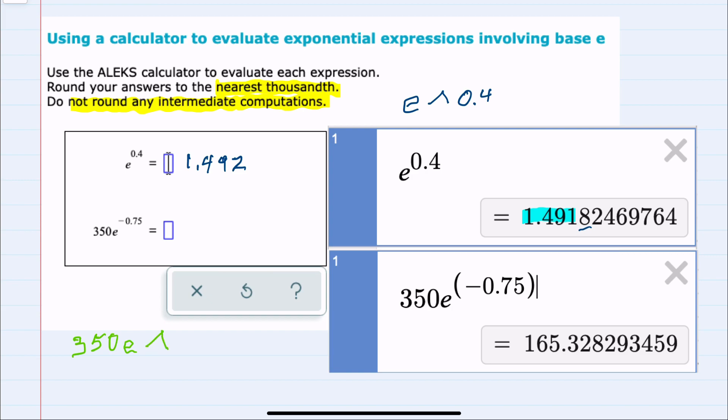Since I'm using a negative exponent, I like to put those in parentheses. So negative 0.75, close the parentheses, and Desmos returns this value.